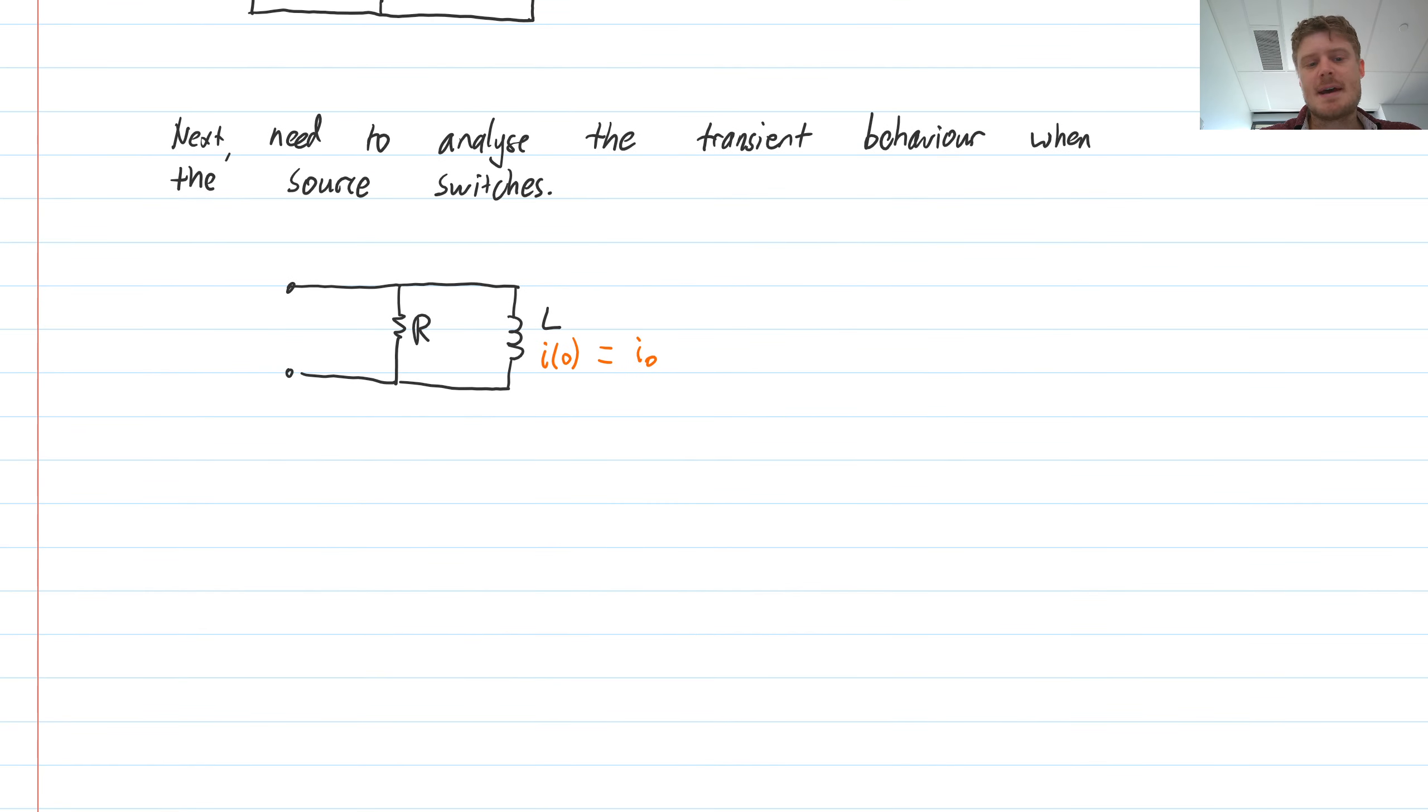So we have this circuit here. It's basically just the resistor and the inductor. This bit out here will have no consequence. There's nothing there. So it's just the resistor and the inductor.